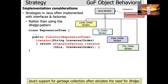The reason we can get away with that in Java is because Java supports built-in garbage collection, so it automatically collects unused memory. In C++, that doesn't happen, so we often use the Bridge pattern to enable semi-automated garbage collection by keeping track of reference counts.